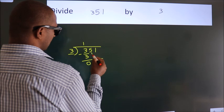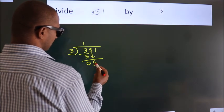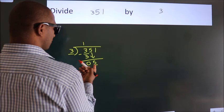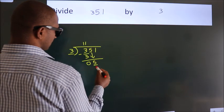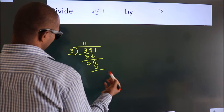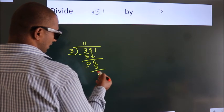After this, bring down the beside number. So 5 down. A number close to 5 in 3 table is 3 once, 3. Now, we subtract. We get 2.